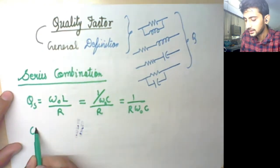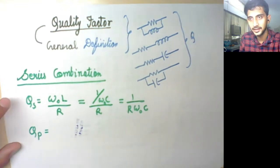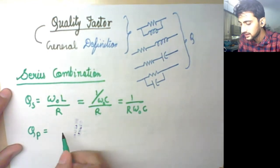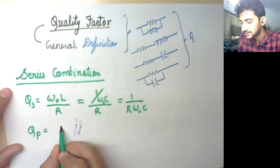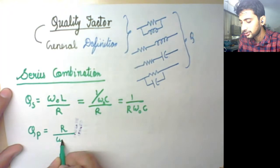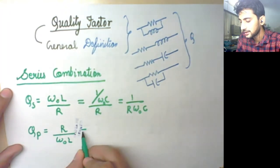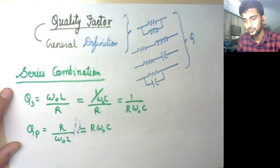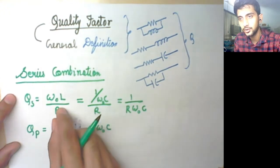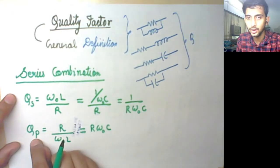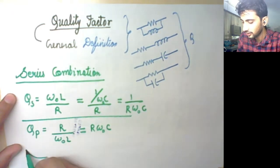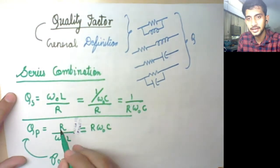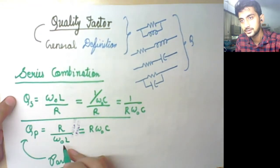For series combination it is reactance upon resistance, but for parallel combinations it is written like this: it is R upon omega naught L, and it is R times omega naught times C. So for series combinations it is reactance upon resistance, but for parallel combinations, QP is written as resistance upon reactance.